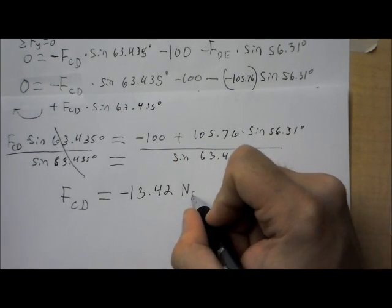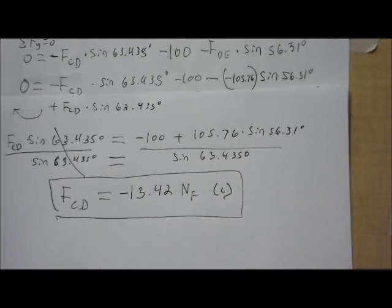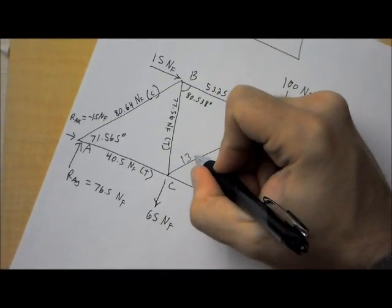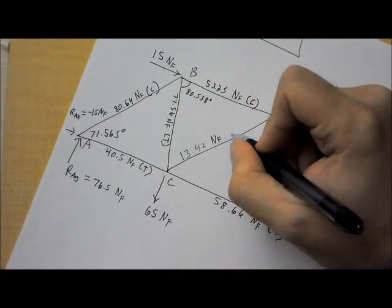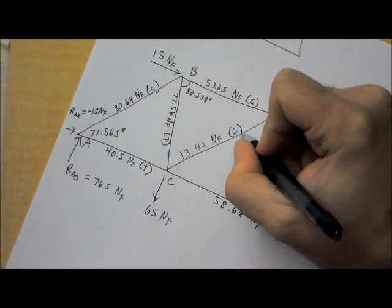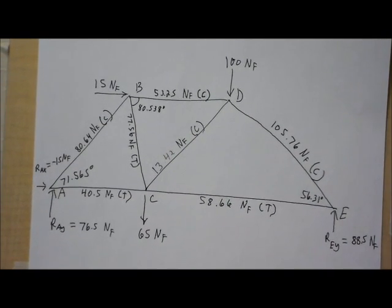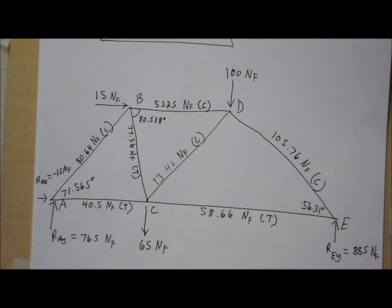And, that's newtons of force and that's a compression force. So, there it is. All I need to do is write it and I'm done. So, I'm going to write it as 13.42 newtons of force and compression. And, that is a completed truss. At least in my class, that's probably the most difficult that we'll get.